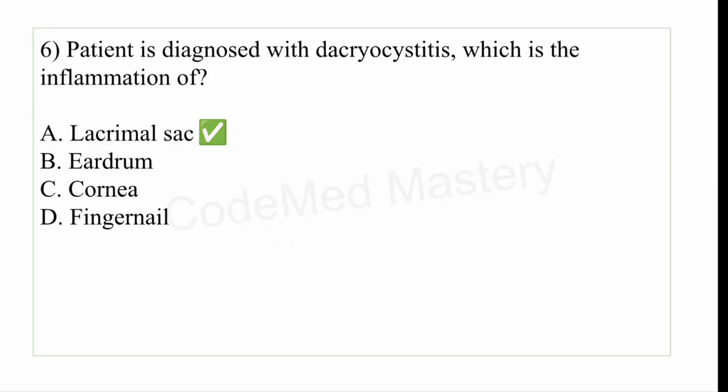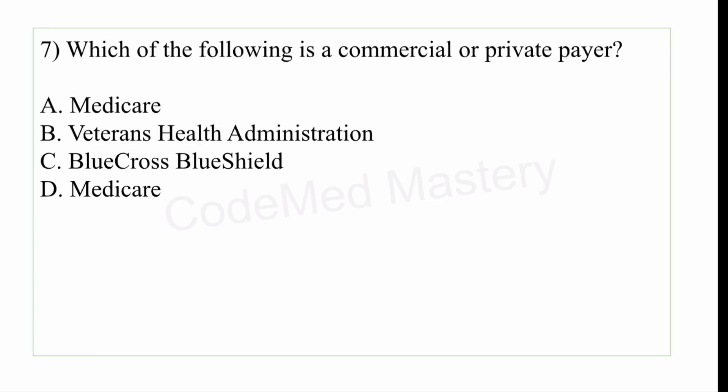Next question: which of the following is a commercial or private payer? Option A: Medicare, option B: Veterans Health Administration, option C: Blue Cross Blue Shield, option D: Medicare. The right answer is option C, Blue Cross Blue Shield. A commercial or private payer is any health insurance company that is not government funded. Medicare, Veterans Health Administration, and the other Medicare option all come under federal government programs. Only Blue Cross Blue Shield is a commercial or private payer.